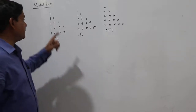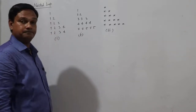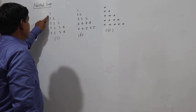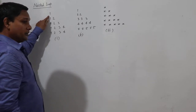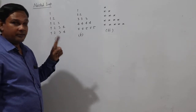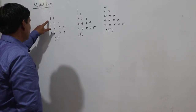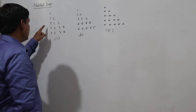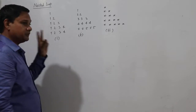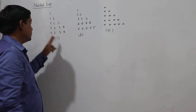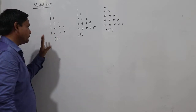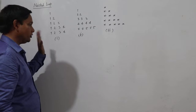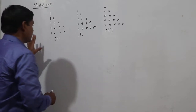You can see some patterns here. In row number one, only one column is there. Row number two, only two columns. Row number three, only three columns. Row number four, only four columns. Row number five, only five columns.